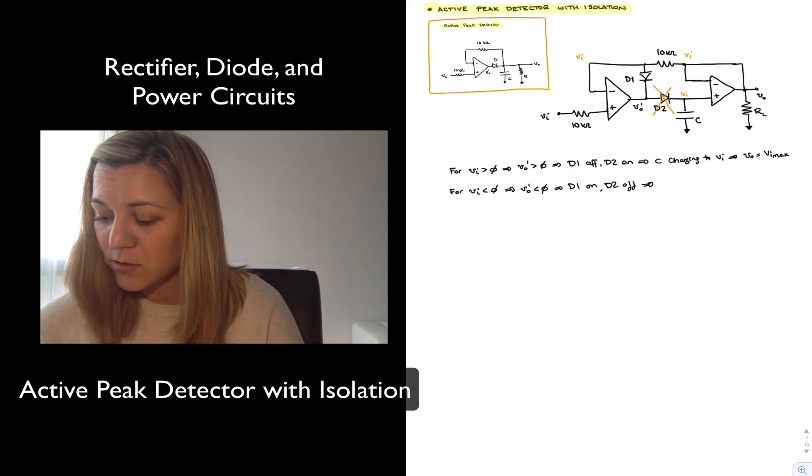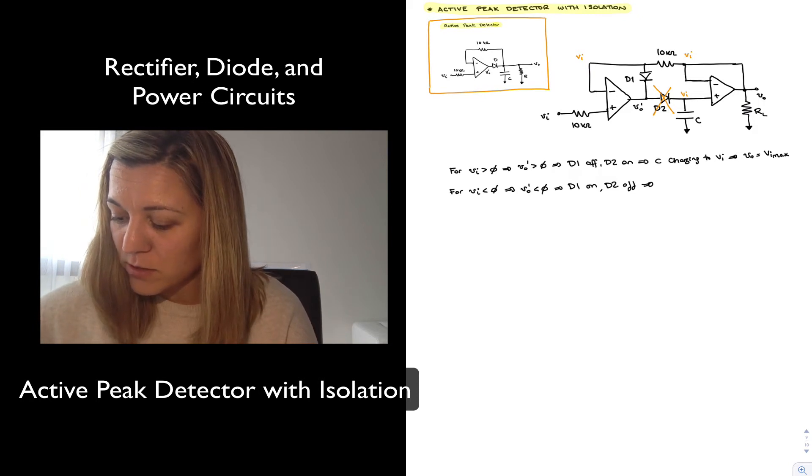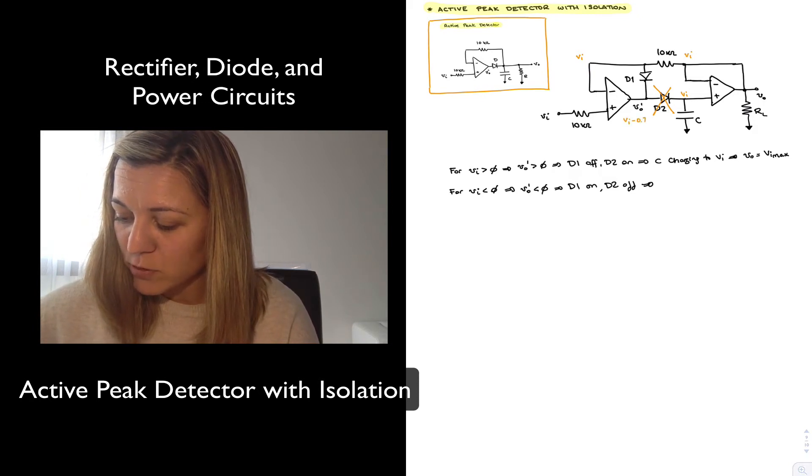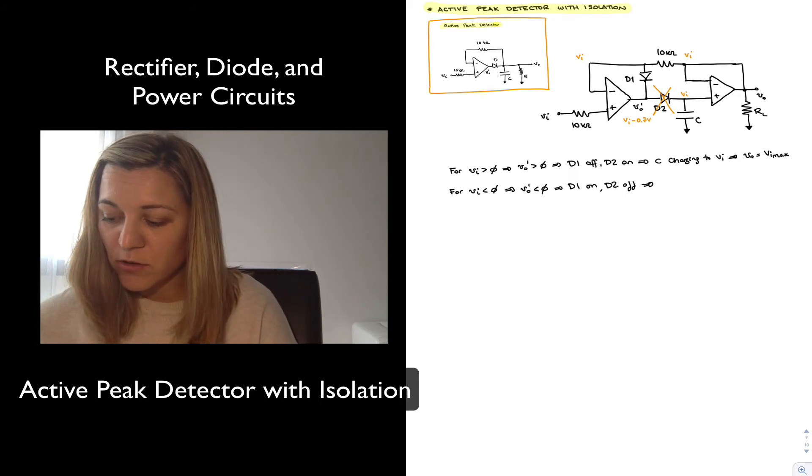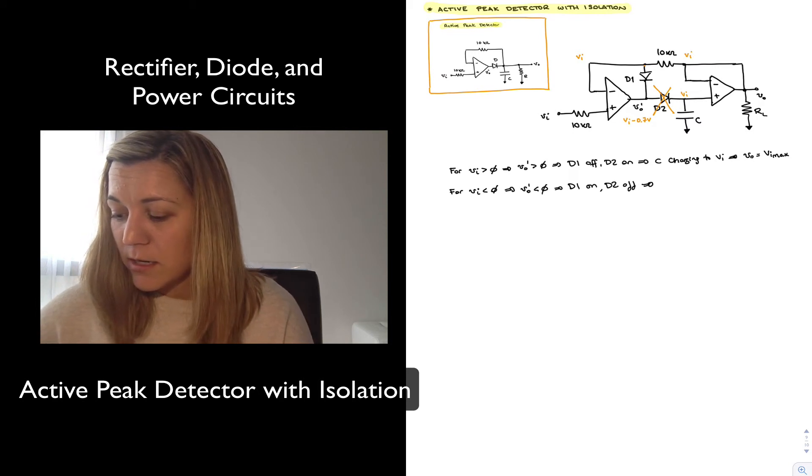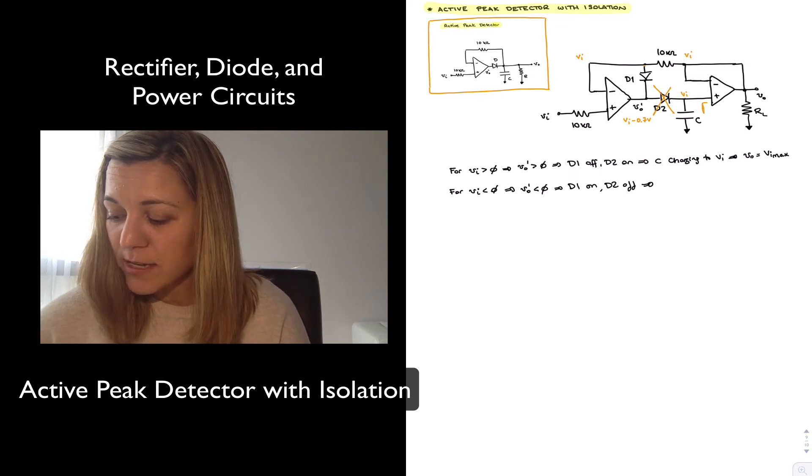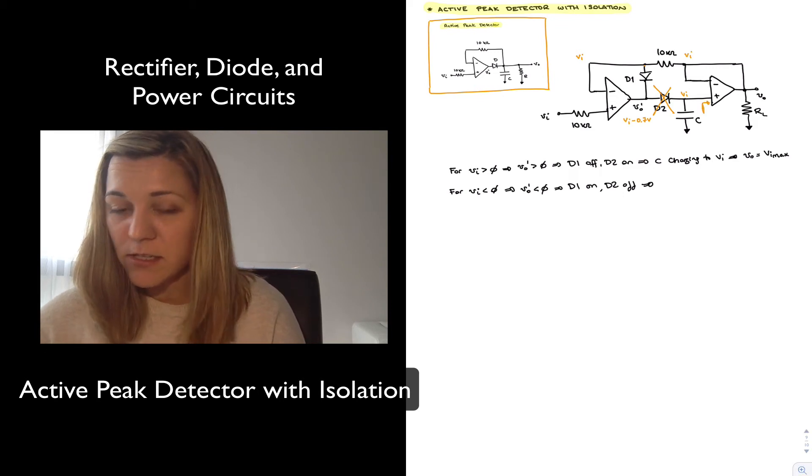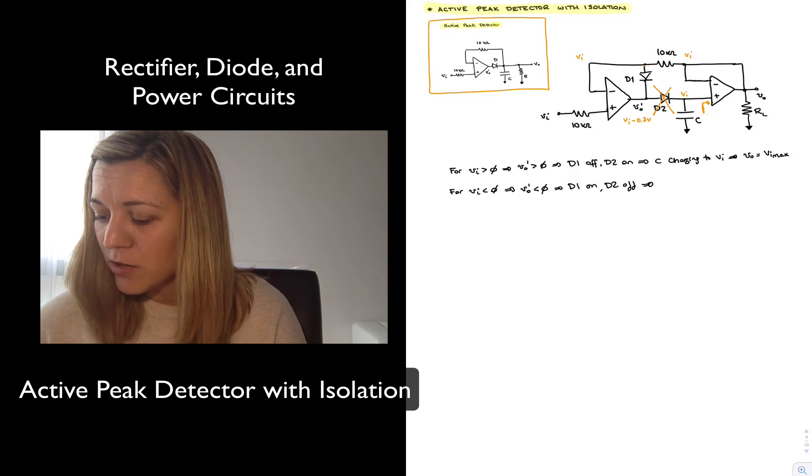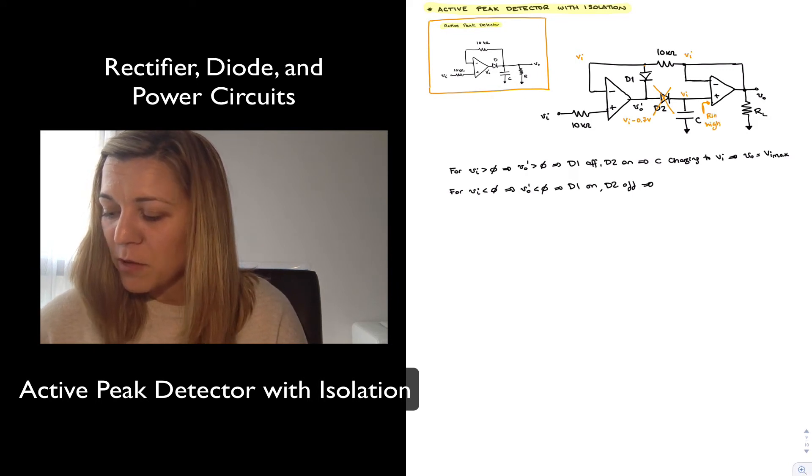And so that means that Vout prime is going to be equal to Vin minus 0.7 volts so that the other negative input terminal of the op-amp is sitting at Vin. Now my capacitor C was charged to Vin and now that my diode D2 is turned off, it has basically no discharge path because on one side it has a reverse biased diode and on the other side it has a high value of input resistance.